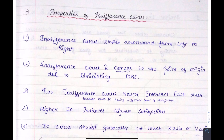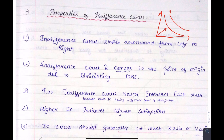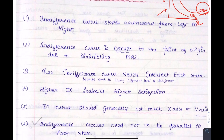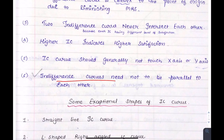Now let's look at the properties of the indifference curve. First, the shape of the indifference curve is downward sloping, and it is convex at the origin — usually it is convex because of the diminishing marginal rate of substitution. After that, if there are two ICs, they will not intersect each other because both are showing different levels of satisfaction. The IC that is further from the origin will show more satisfaction. Also, the IC curve will not touch the X axis or the Y axis.